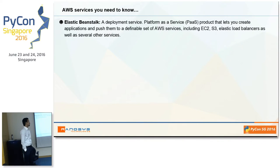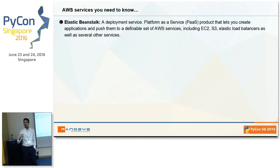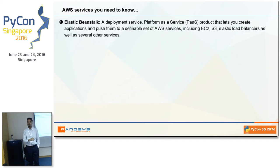One deployment service is Elastic Beanstalk. As I said, AWS is infrastructure as a service, but on top of that it provides a platform as a service. Elastic Beanstalk is where you can set up your application and it will automatically start EC2, RDS, and create S3 buckets for you. Resource provisioning happens automatically. You do not need to start EC2, RDS, S3, and CloudWatch separately — it provides a combination of those services in a single console.